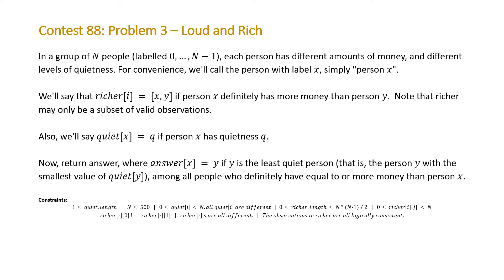Note that richer may only be a subset of valid observations. Also, we'll say that the x-th element of the vector quiet equals q if person x has quietness q. Now return answer where answer x, in other words, the x-th element of the vector answer equals y, if y is the least quiet person—that is the person y with the smallest value of quiet y—among all people who definitely have equal to or more money than person x.